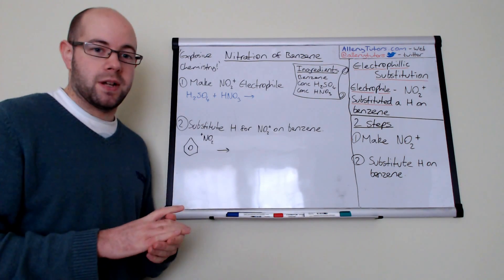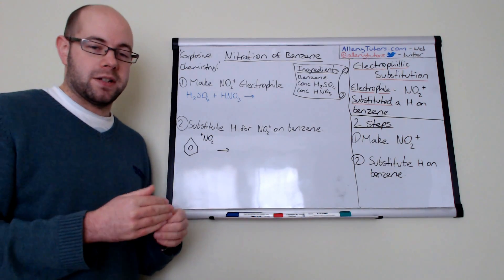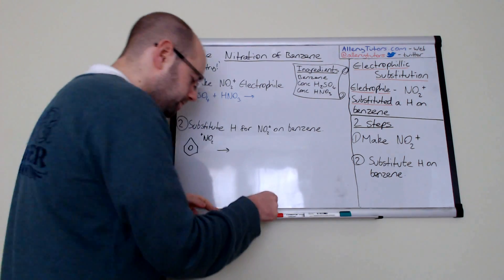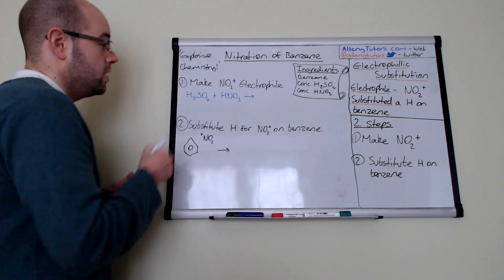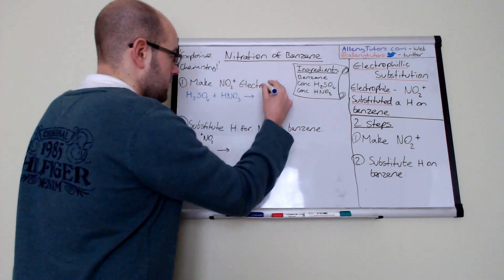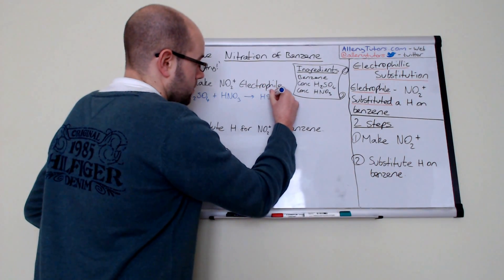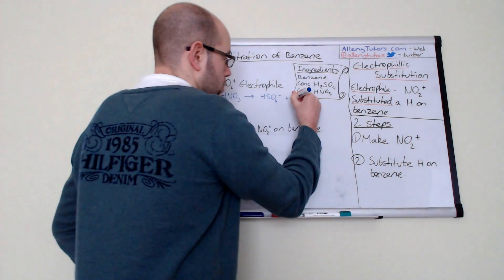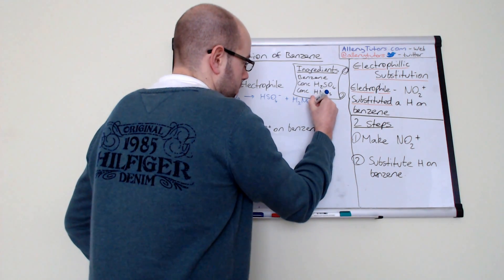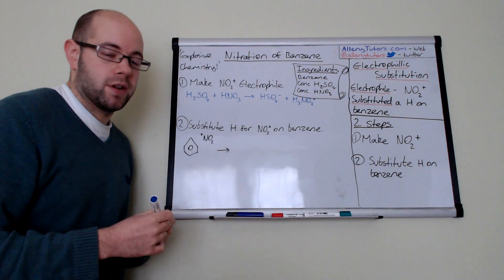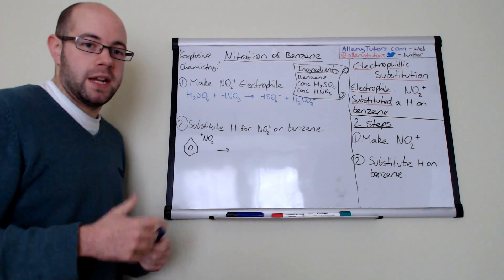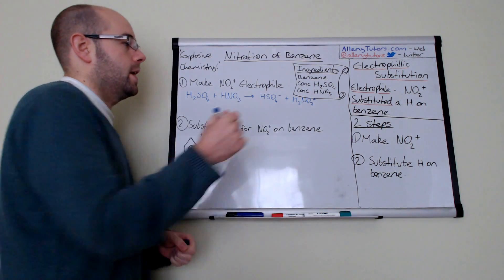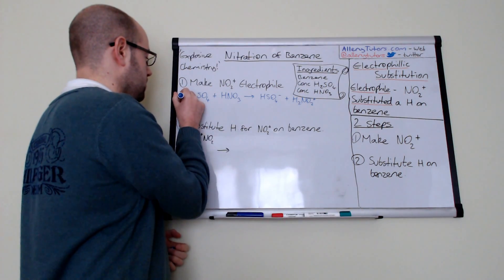This is a Bronsted-Lowry acid, which means an acid is a proton donor and a base is a proton acceptor. So the products of this reaction: if sulfuric acid donates a proton, you make HSO4- minus because this has lost the proton, and you make H2NO3+ because that has gained a proton. This looks quite unstable and this reaction will occur very quickly. That's step one.